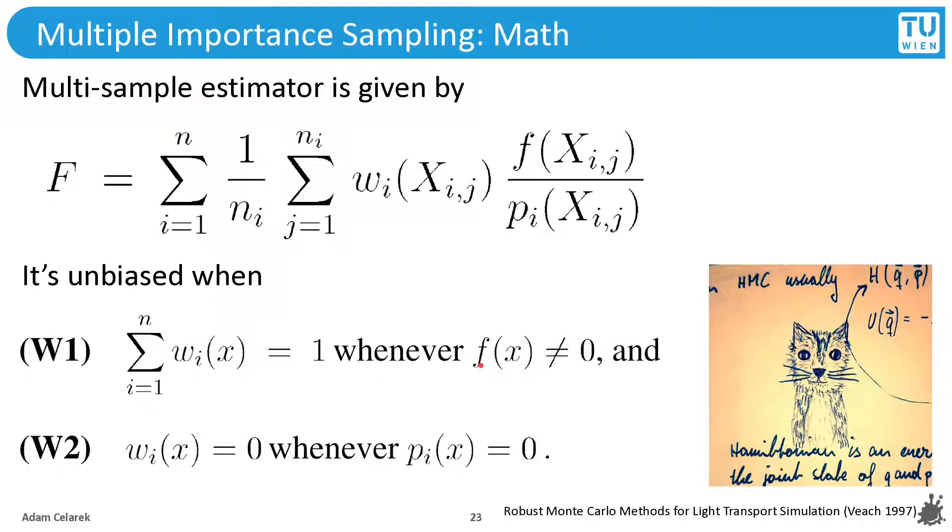It only applies when f(x) is not 0. But this is not very limiting, because if f(x) is 0, this whole thing becomes 0. So it doesn't matter a lot. The next one, the weight should be 0 whenever the probability is 0.